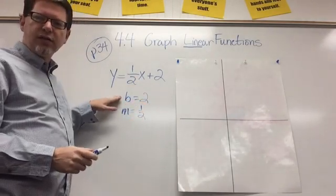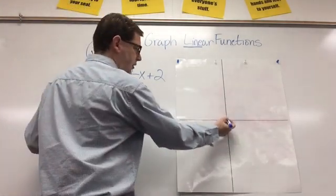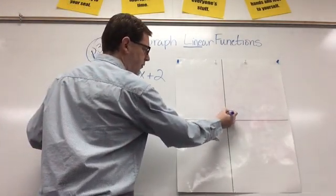And since B is 2, that's our Y intercept where it crosses the Y axis. So, I'm going to go to my Y axis and go 1, 2. And that's going to be my first point.